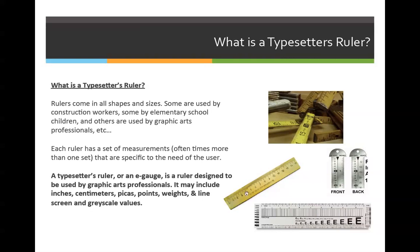If you look at the ruler right here, there's only one set, and I believe it is centimeters. But if you look at a traditional ruler, it would have inches on one side and centimeters on the other. You can have points and picas on different types of rulers. What we're going to focus on is a typesetter's ruler.